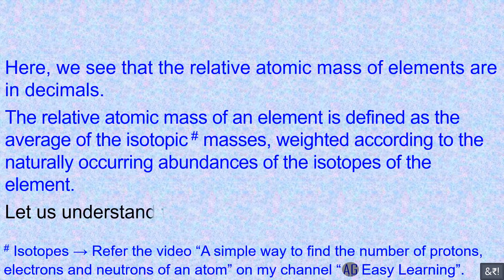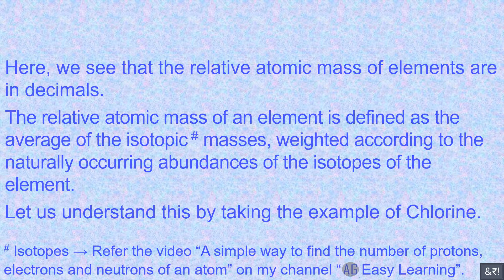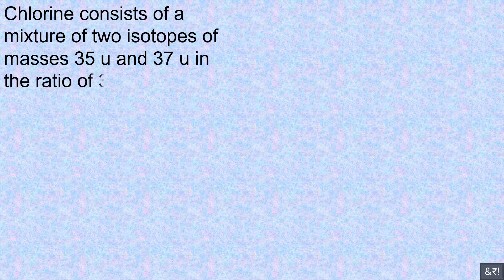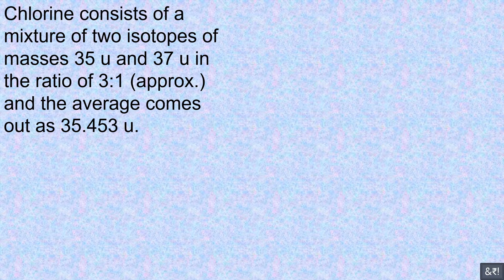Let us understand this by taking the example of chlorine. Chlorine consists of a mixture of two isotopes of masses 35 U and 37 U in the ratio of approximately 3 to 1, and the average comes out as 35.453 U.